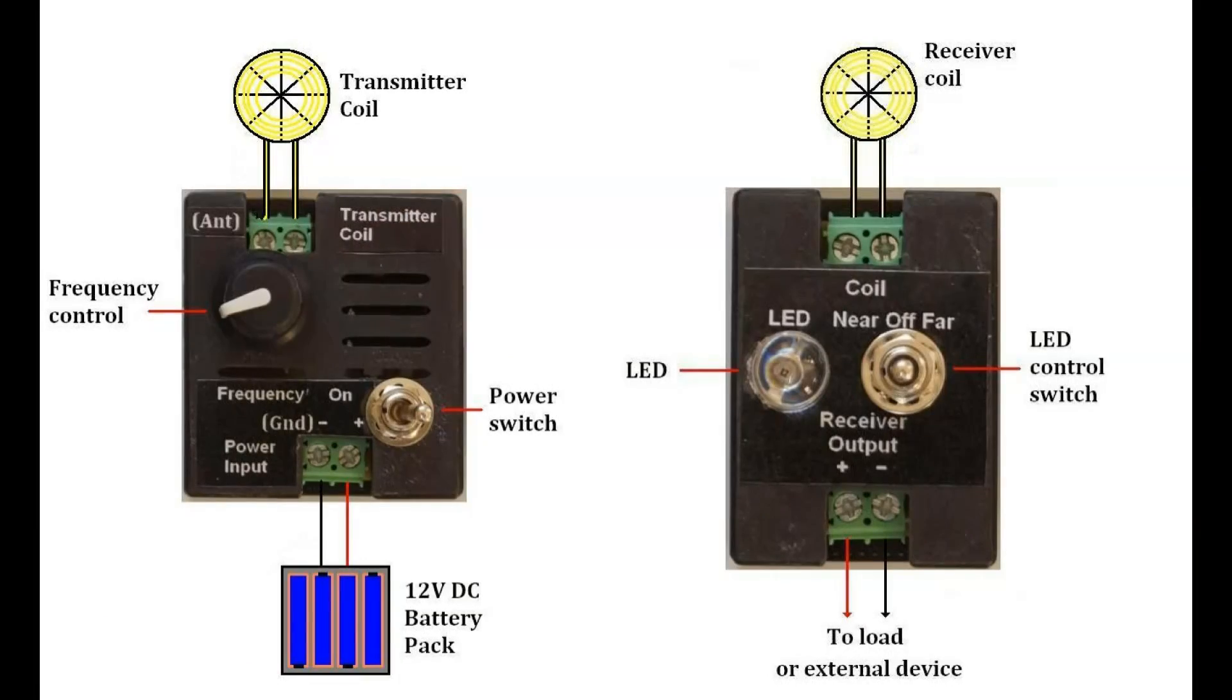The kit is composed of a transmitter and receiver, each with a spiral coil connected to a terminal block. 12V DC power is supplied to the transmitter and DC voltage can be drawn from the receiver output.